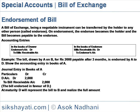Accounting entry. In the books of the drawer: endorser account debit to bills receivable account. In the books of the endorser: bills receivable account debit to endorser's account. There will be no entry in the books of the drawer, as endorsement is a private affair between the drawer and the endorser and the drawer is not involved.